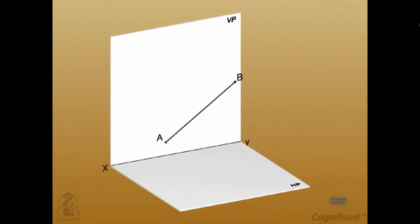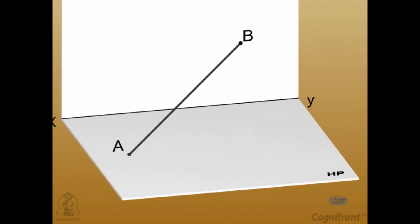Look at the diagram. Here, line AB is assumed to be parallel to VP but inclined to HP by the angle 45 degrees.